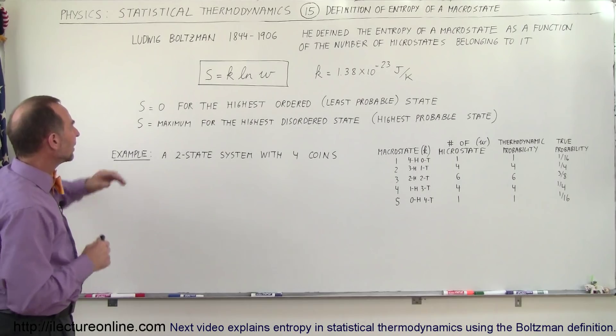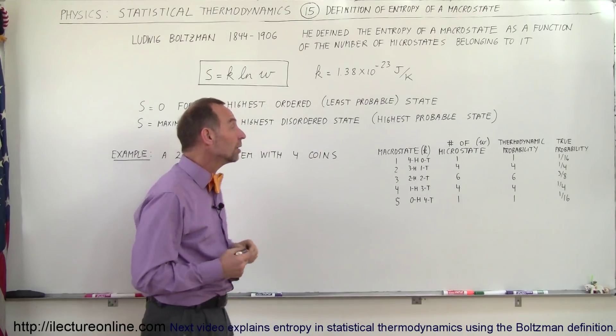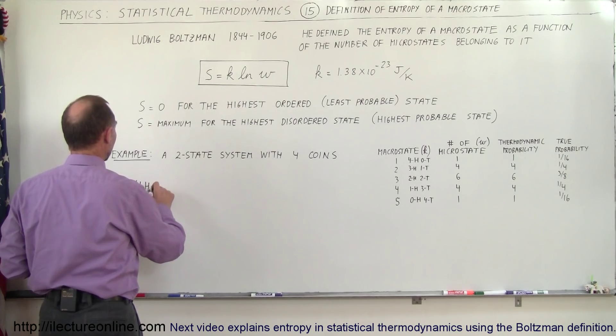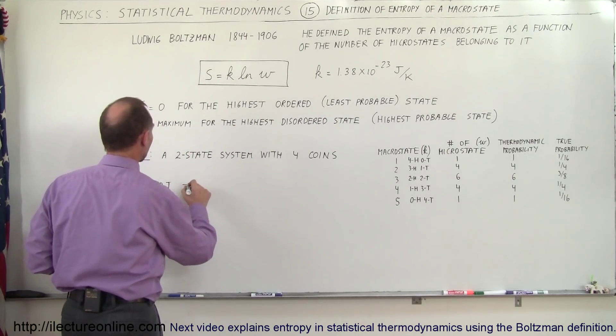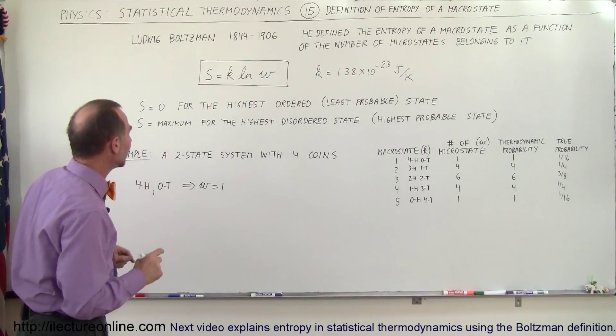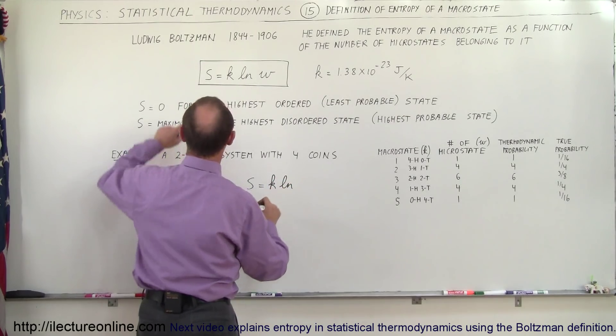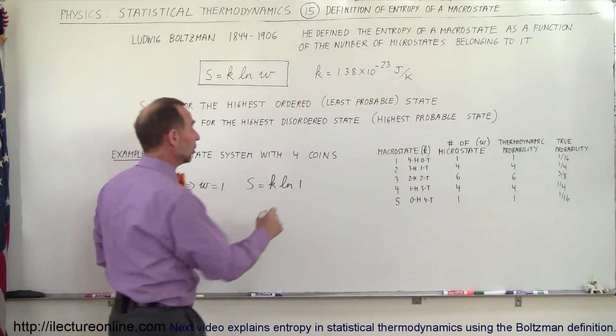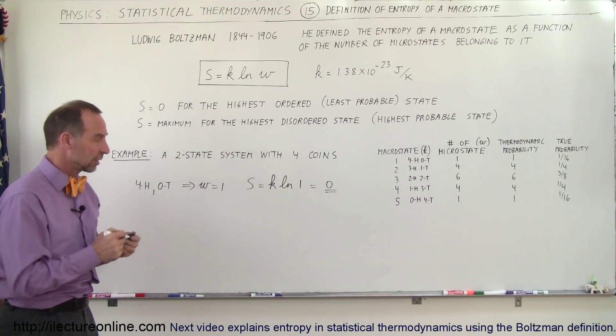Now let's say that we want to calculate the entropy for macrostate one, where we have four heads and zero tails. So that means we have only one microstate, so W equals one. There's only one microstate in that particular macrostate, and so the entropy for that would be equal to k times the natural log of the number of microstates, which in this case is one. Now the natural log of one is equal to zero, so this would be equal to zero. That means entropy is at zero in the most ordered state of this particular system.